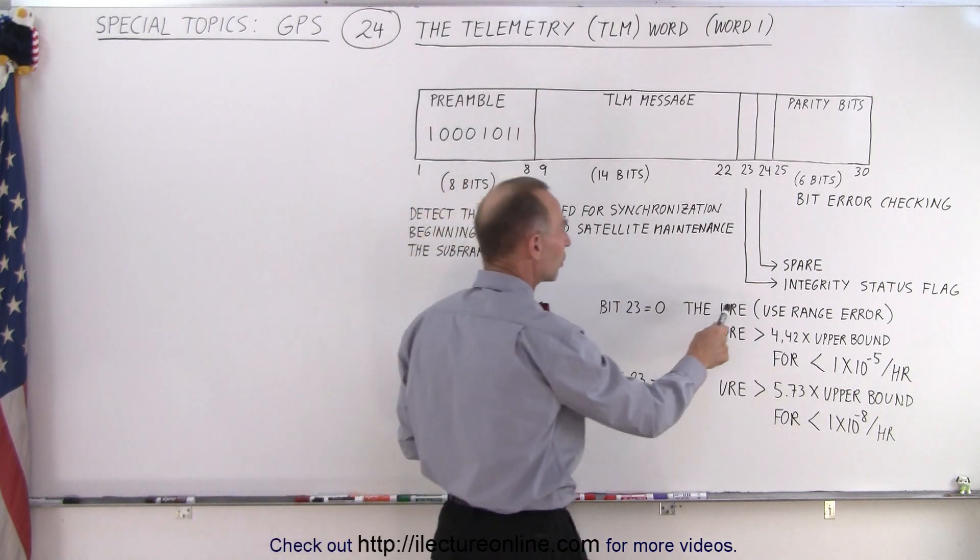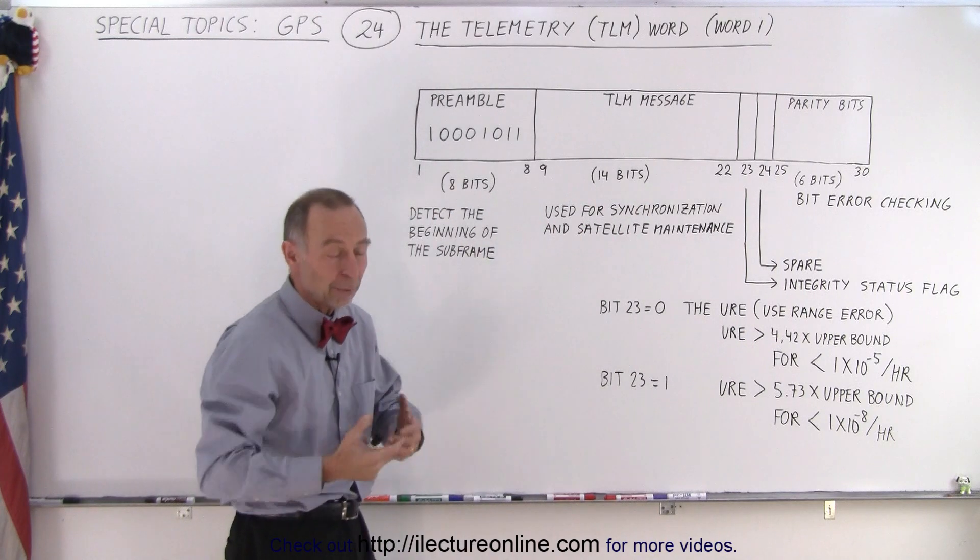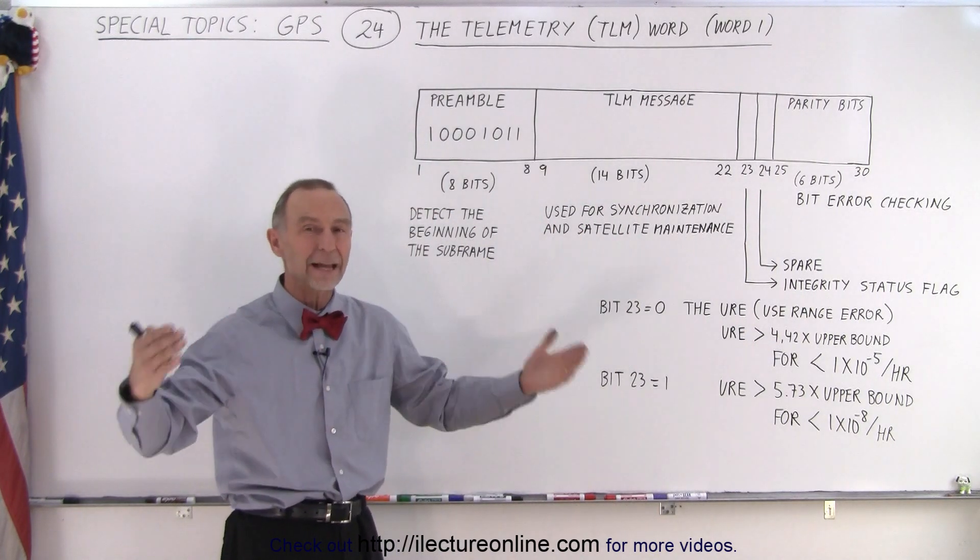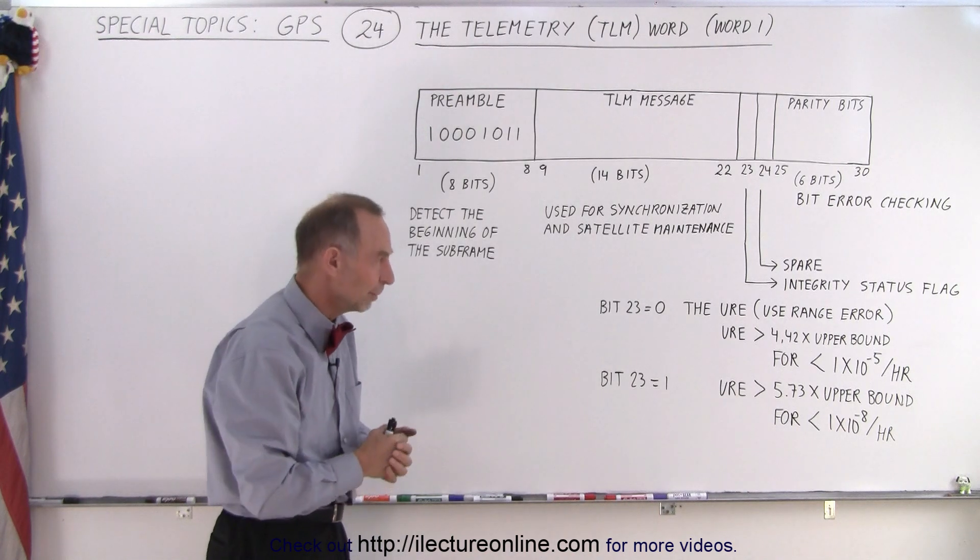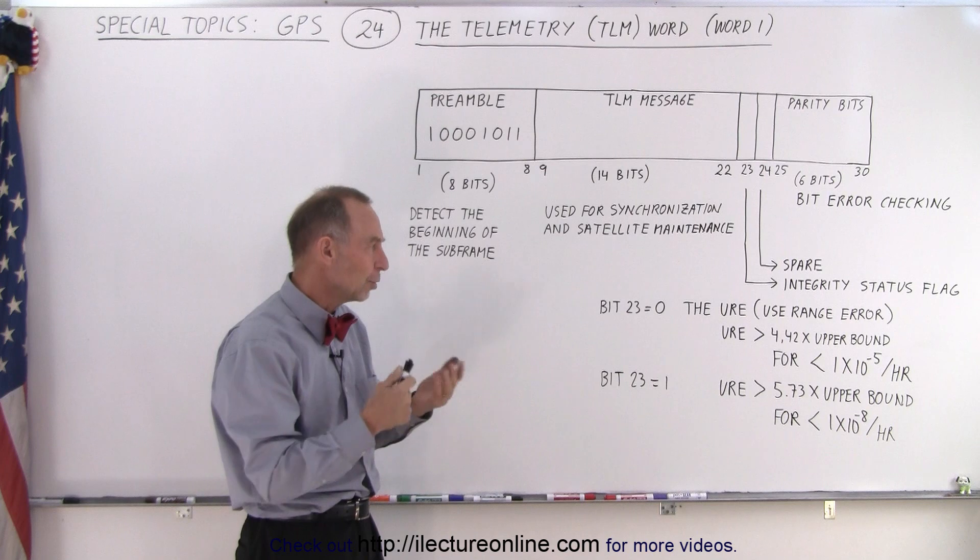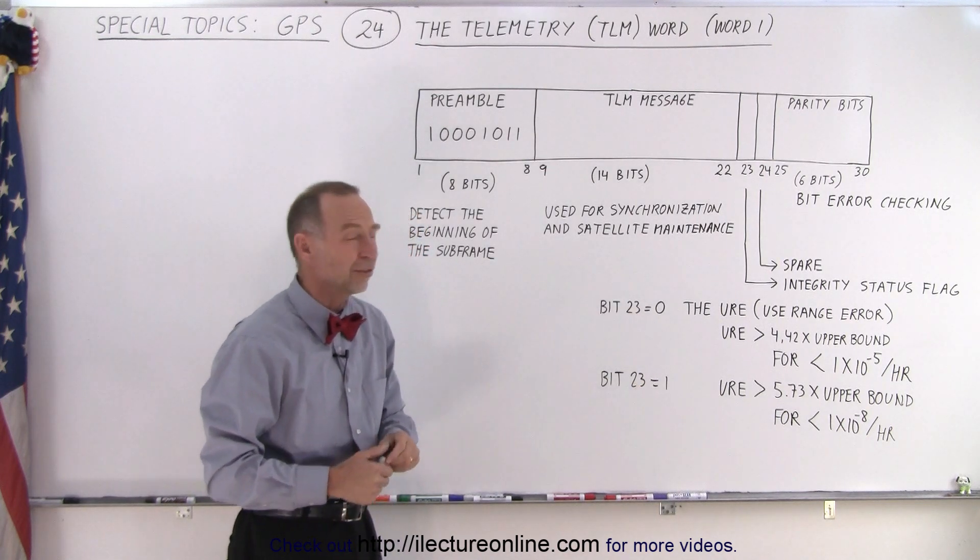We have what we call the URE, which is the use range error. That can be anywhere from a few meters to tens of meters to hundreds of meters, meaning the expected error to the signal. The URE can be set to zero or one. If the flag is set to zero,